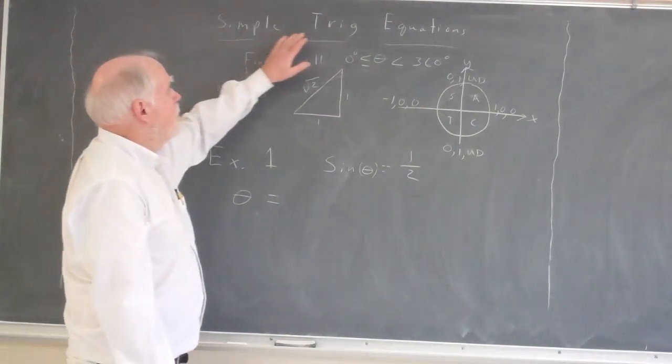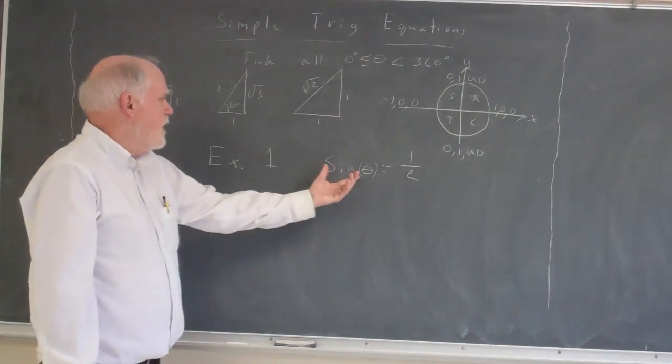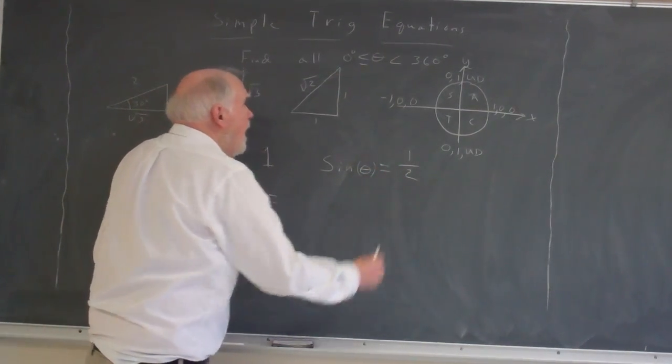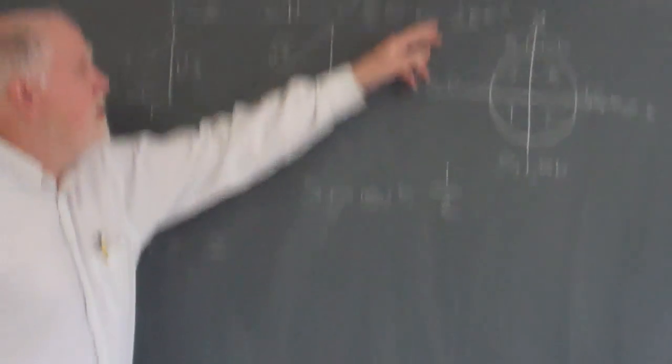Okay, we're going to talk about simple trig equations, and we're going to have an equation like sine of theta equals 1/2. I'll make that a little clearer, and we're going to find all theta between 0 and 360.